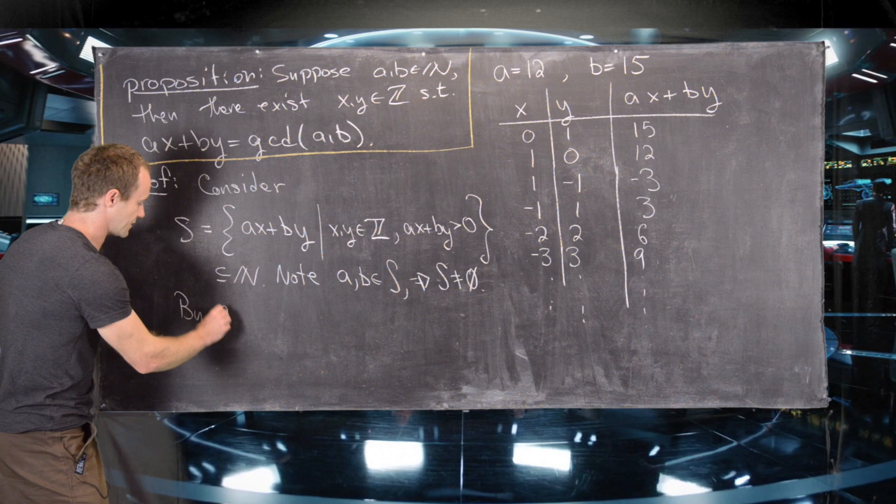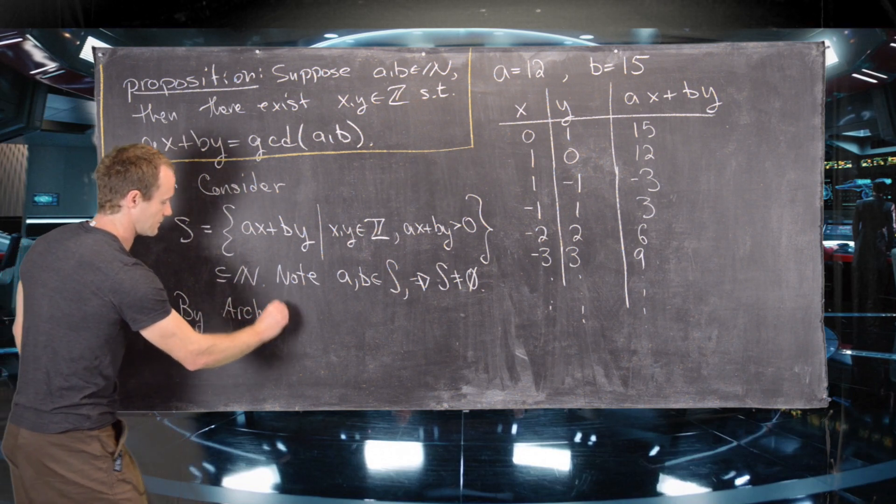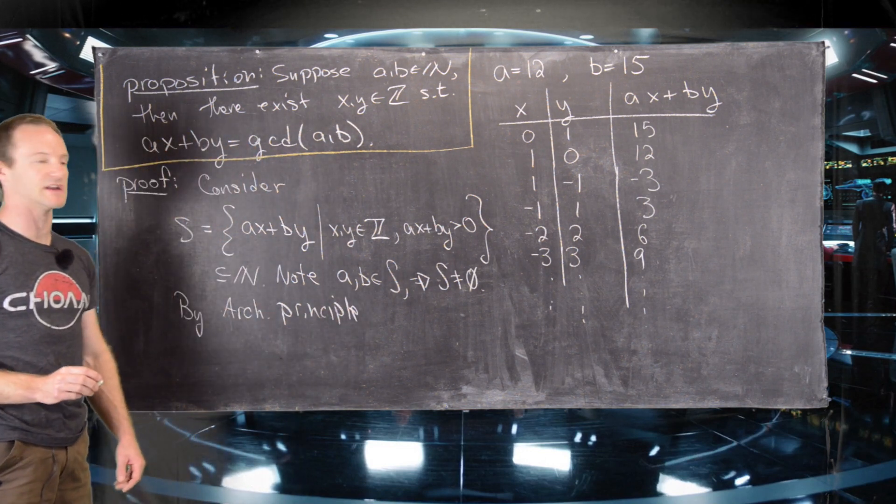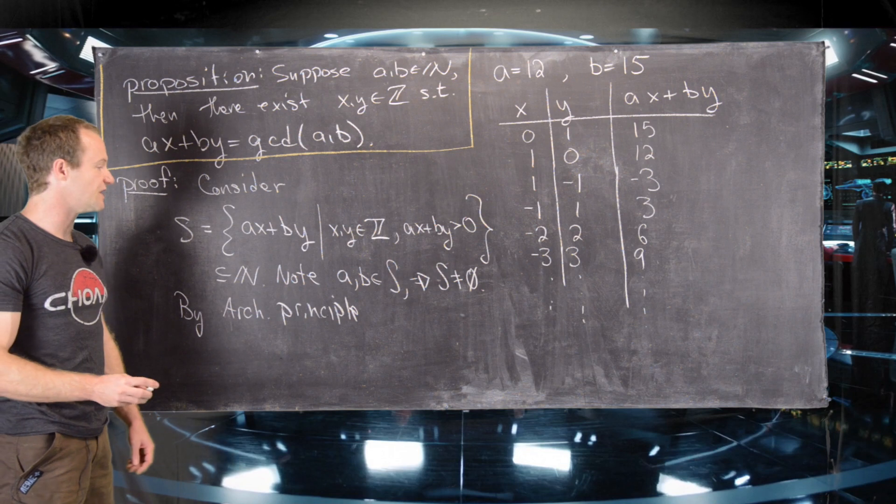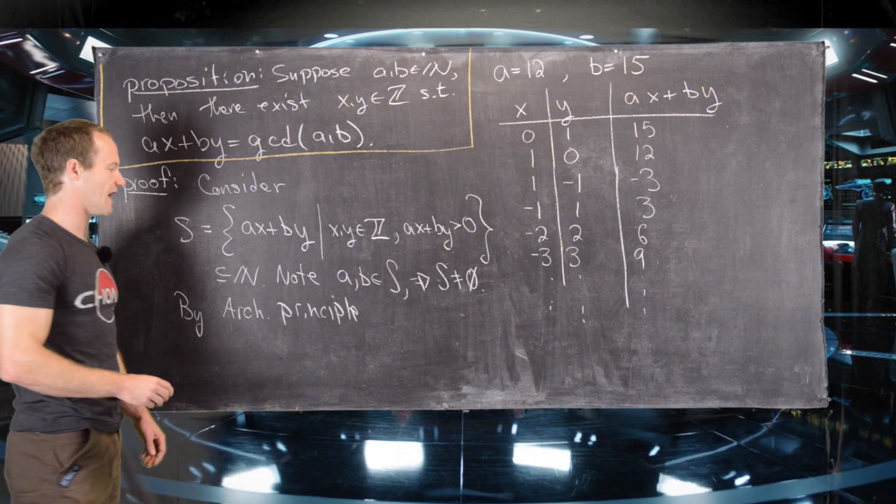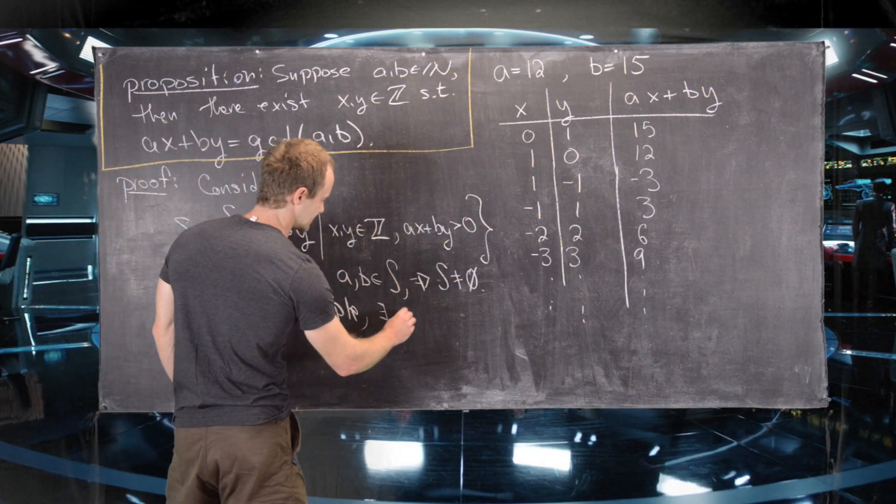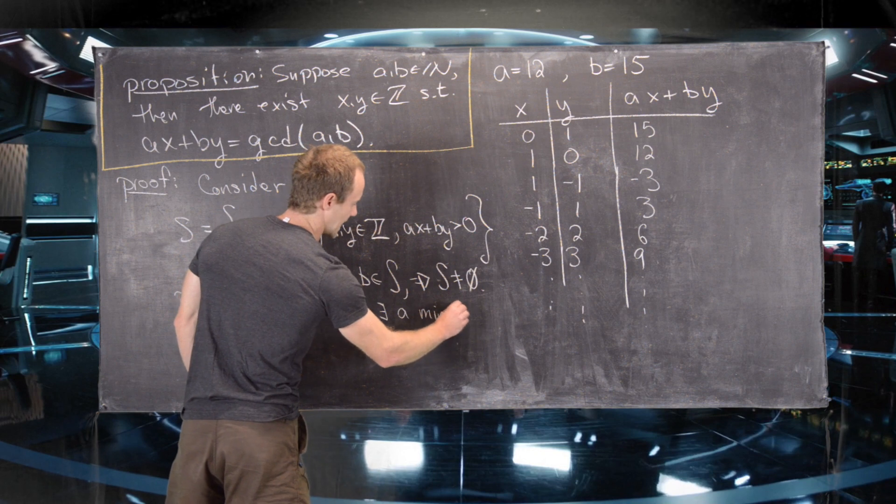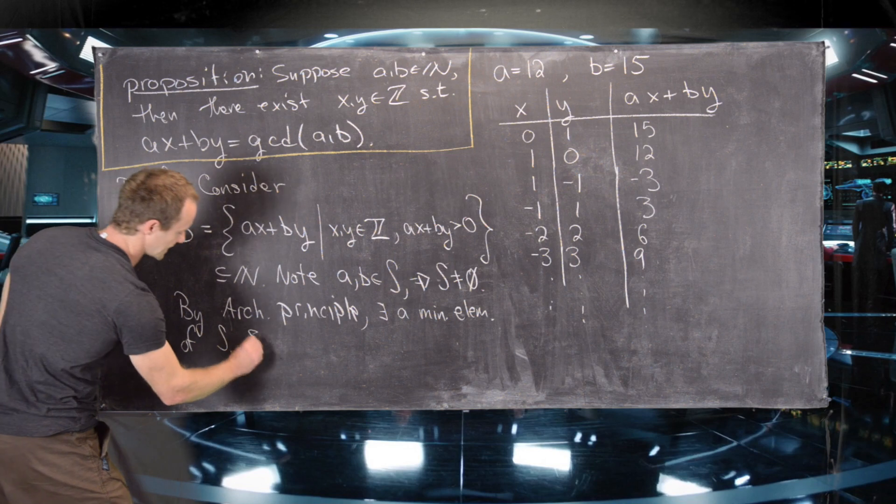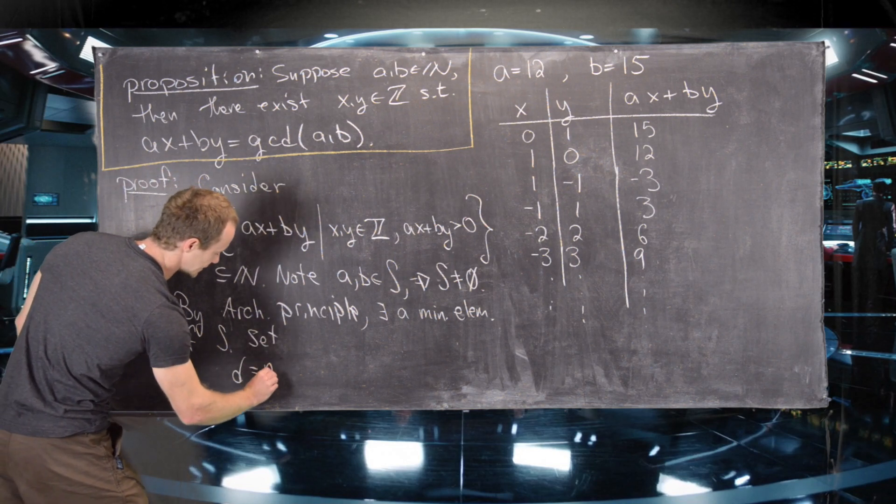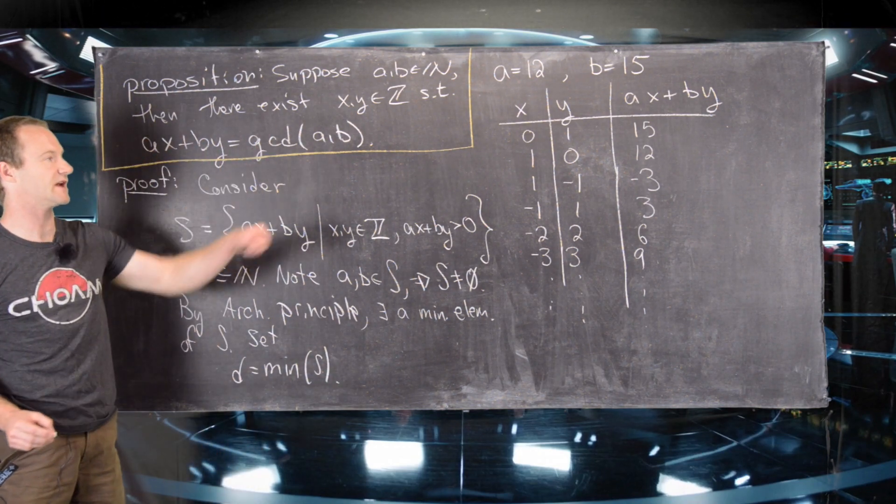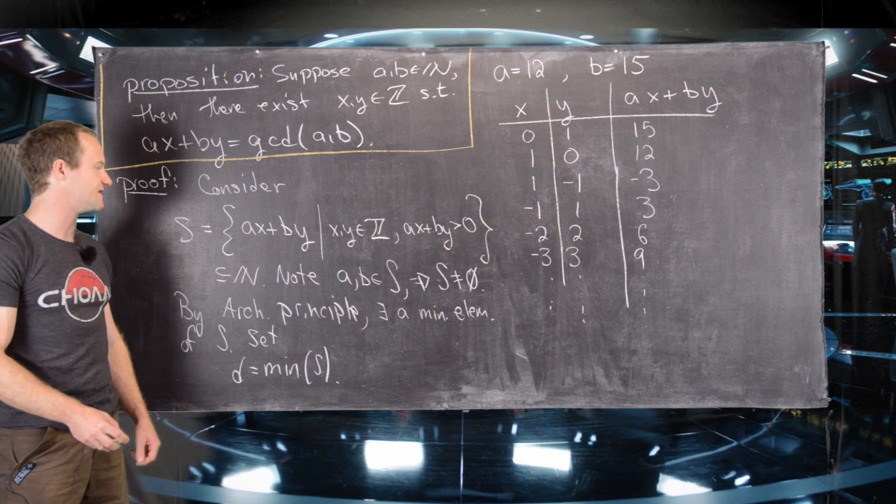And then, by the Archimedean principle, which says that all subsets of the natural numbers that are non-empty achieve a smallest element, we know that there is a minimal element of S. So by the Archimedean principle, there exists a minimal element of S. So let's set D equal to this minimal element of S. D is very suggestive of what we're getting, which will, in fact, be the GCD of A and B.